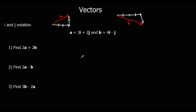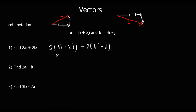And we can just add these together. So 2a plus 2b — we've got 2 lots of (3i plus 2j), plus 2 lots of (4i minus j), which is 6i plus 4j, plus 8i minus 2j. We can add the i's together and add the j's together, giving us 14i plus 2j.